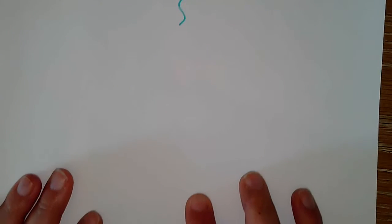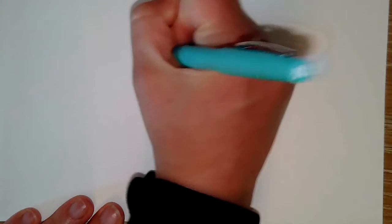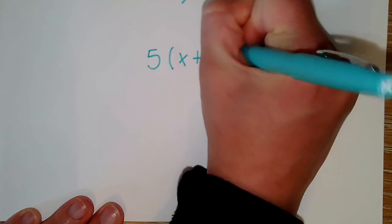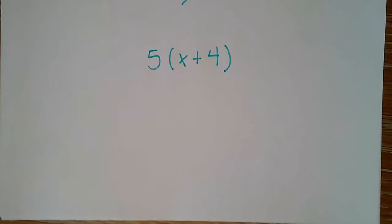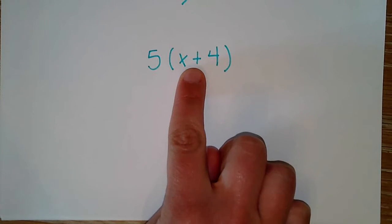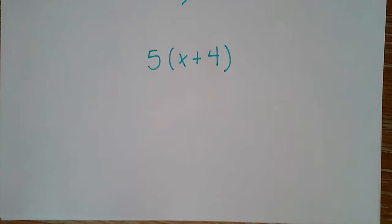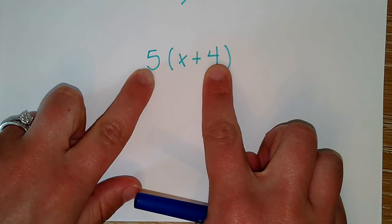Now when we get to algebra, we are given expressions like this. Here I cannot simplify that inside group first because I don't know the value of x. This is where the distributive property becomes incredibly important. I still want to simplify my expression because I have like terms here.